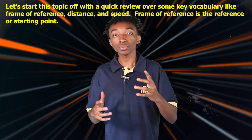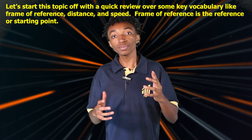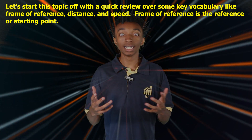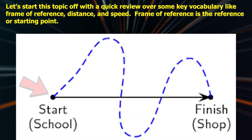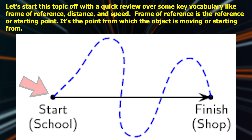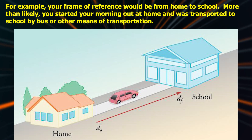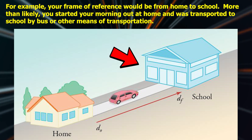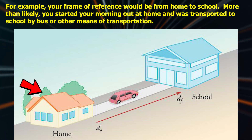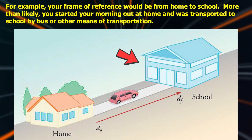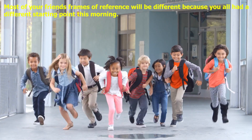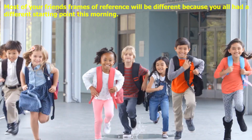Let's start with a quick review of some key vocabulary: frame of reference, distance, and speed. Frame of reference is the reference or starting point — it's the point from which the object is moving or starting from. For example, your frame of reference will be from home to school. Most likely, you started your morning at home and were transported to school by bus or other means of transportation. Most of your frames of reference will be different because you all had a different starting point this morning.